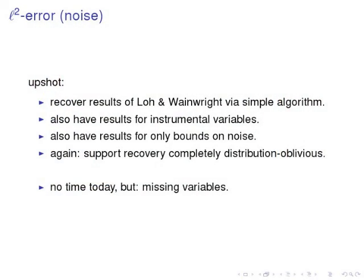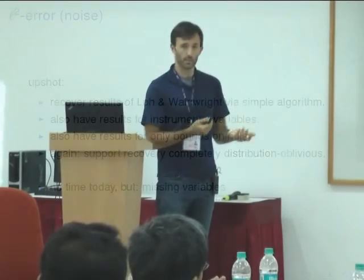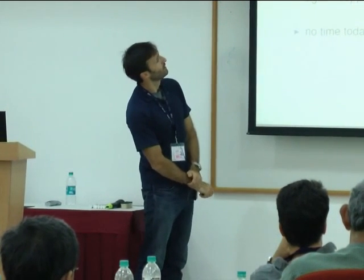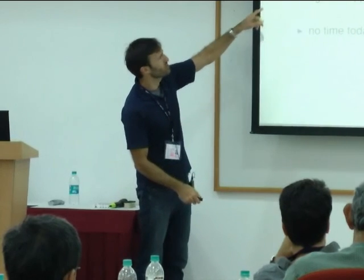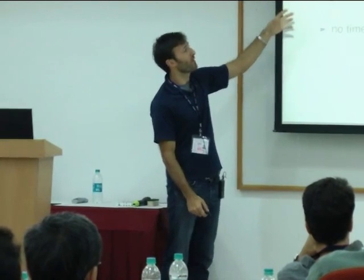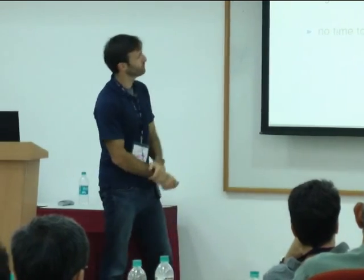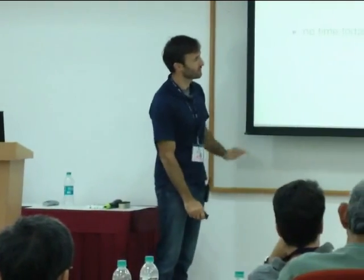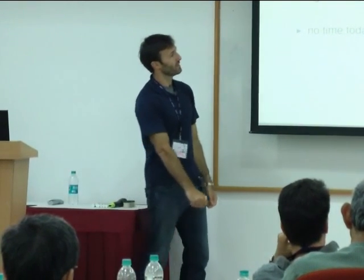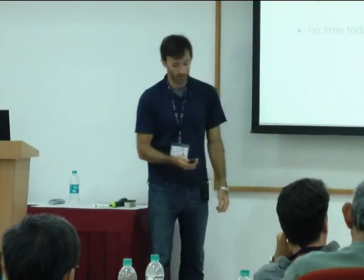The final upshot is that with an extremely simple algorithm we basically recover what are the state-of-the-art results. And we also have results for instrumental variables. And I didn't show this here, but if you don't know sigma W but you only have upper and lower bounds on it, you can also get bounds on your recovery. And again support recovery is, for support recovery that's completely distribution oblivious. And the results for missing variables are very much analogous to this.